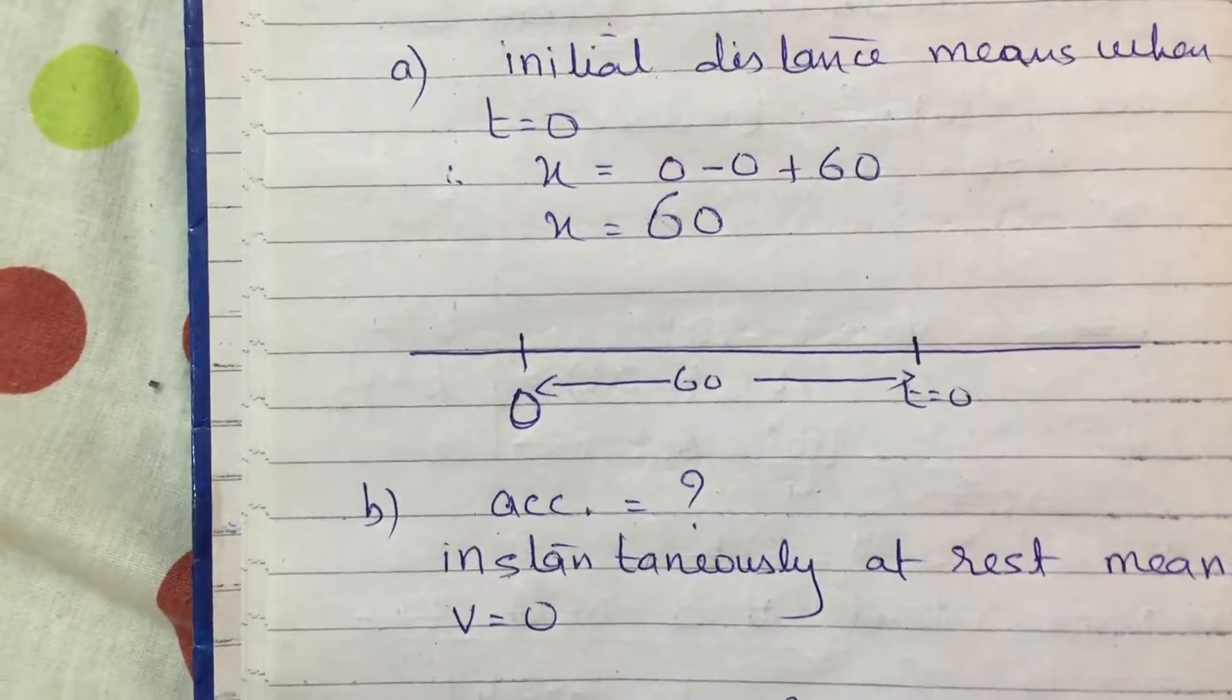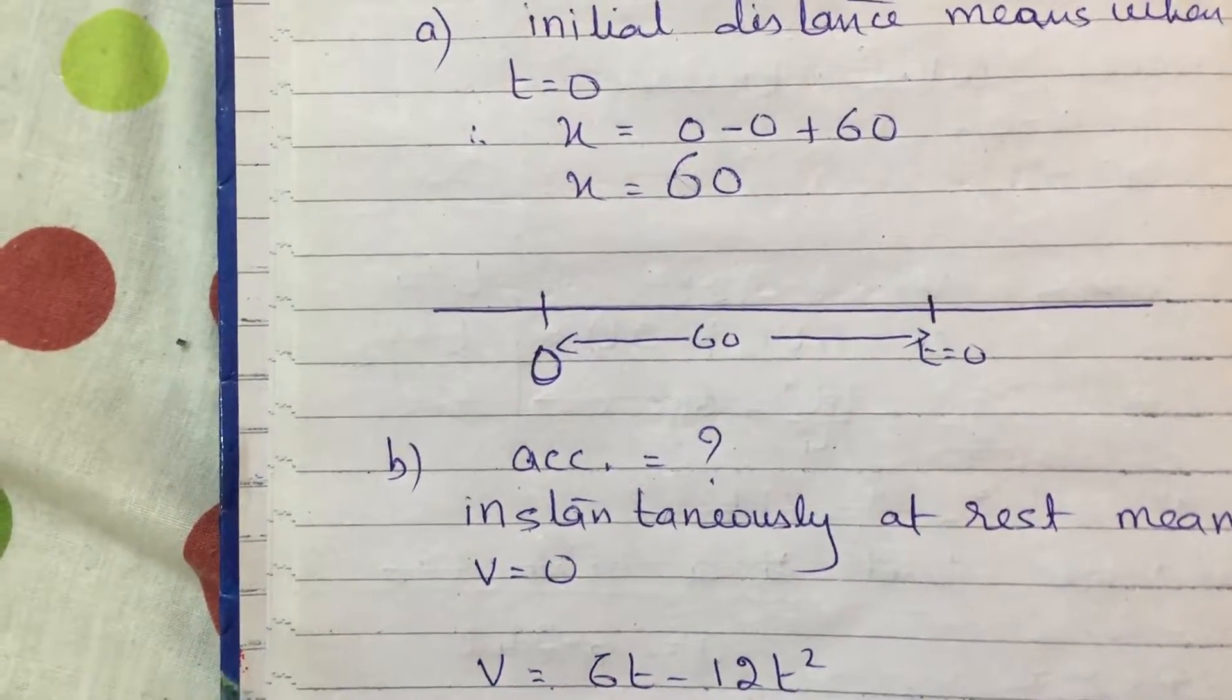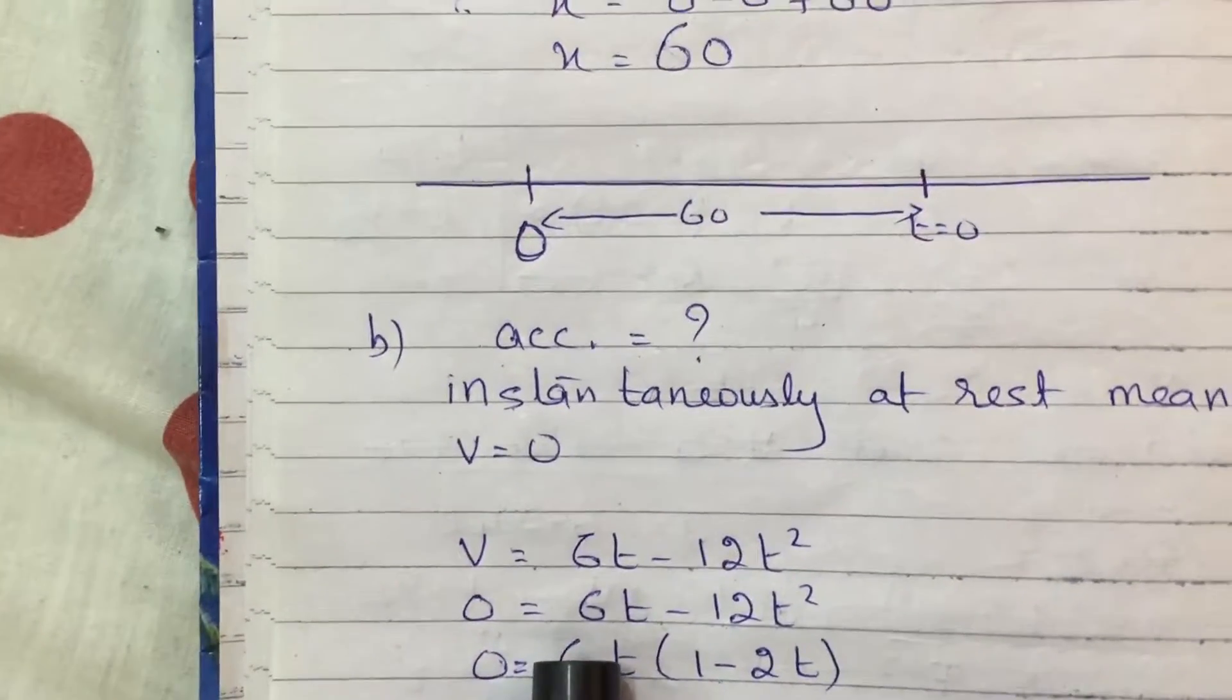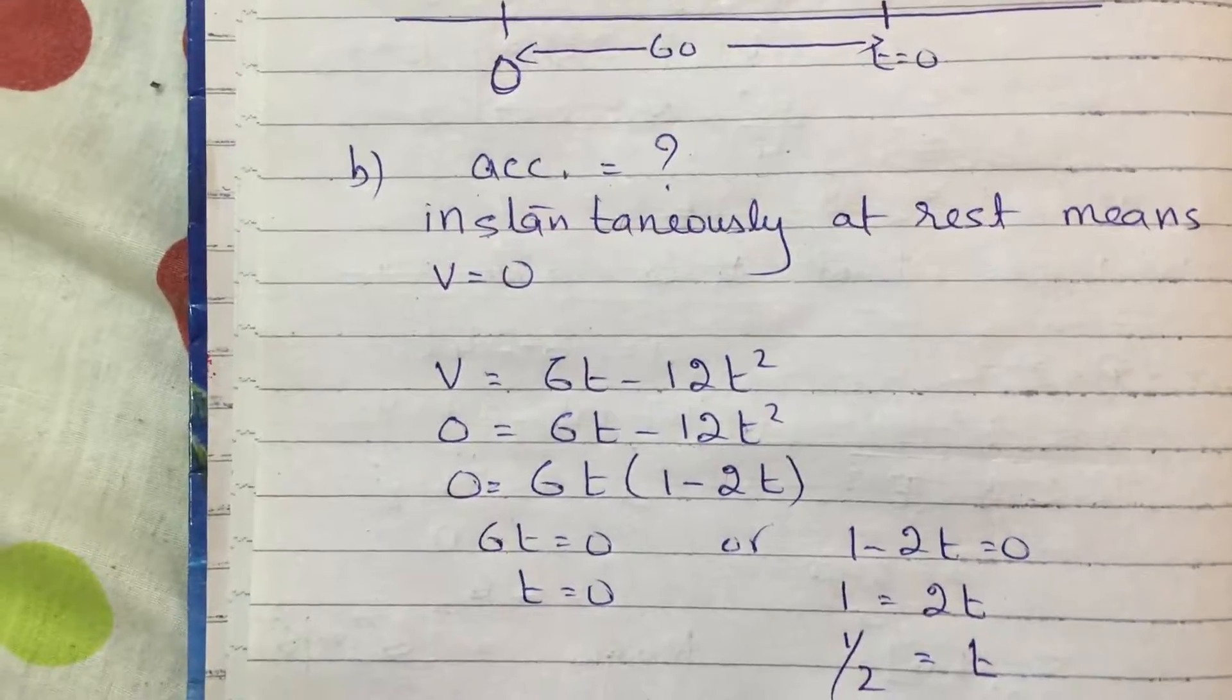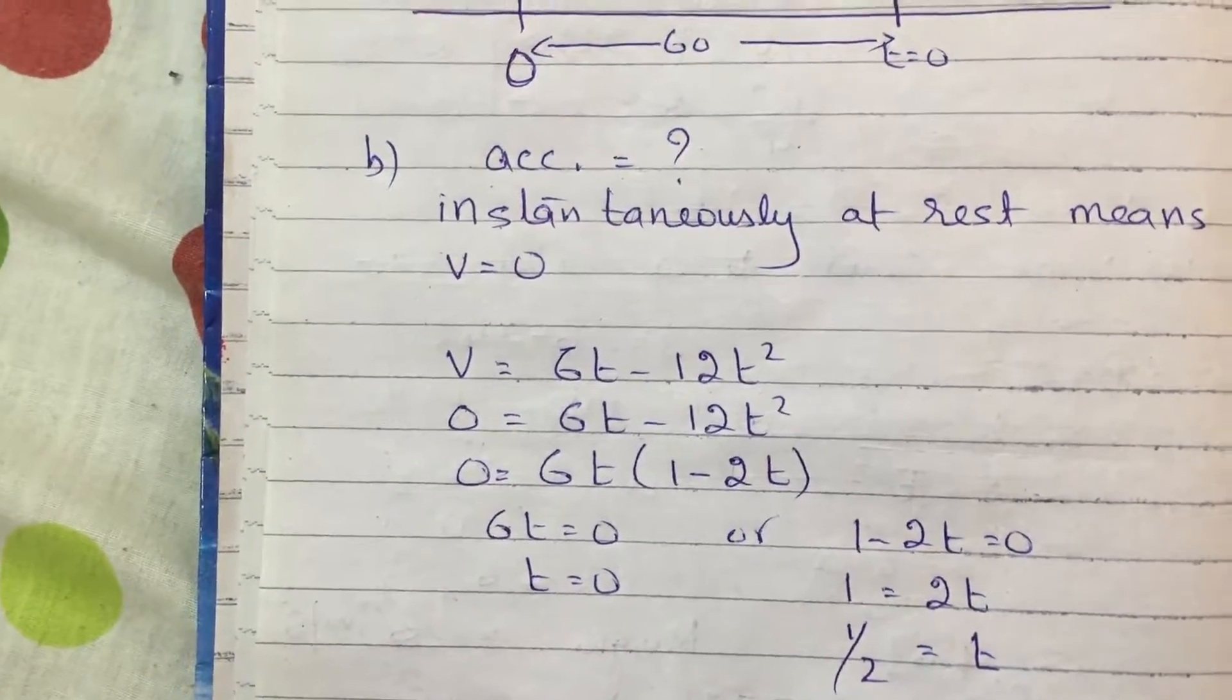Now we don't have the velocity equation. To find out the velocity equation we will differentiate the displacement equation and then we will get time. So I got 2 times t equals 0 and t equals 1/2.